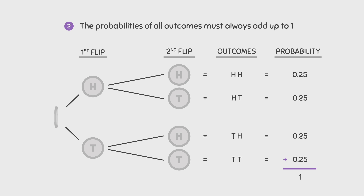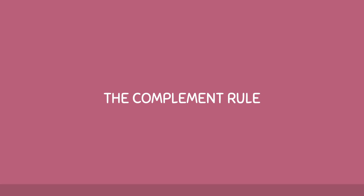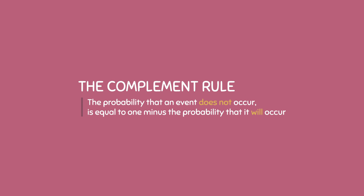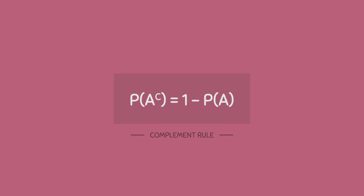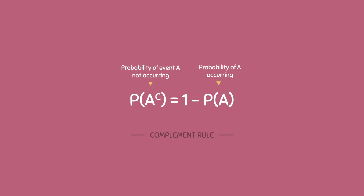By knowing this mandatory condition, we can derive something called the complement rule. This rule says that the probability that an event does not occur is equal to 1 minus the probability that it will occur. The formula can be written as: the probability of complement A — in other words, the probability of event A not occurring — is equal to 1 minus the probability of A.